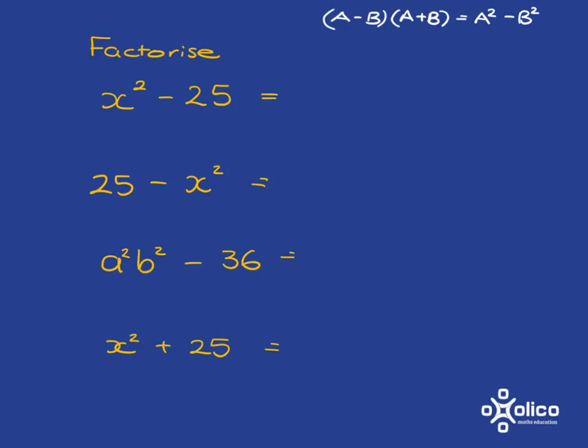So if we're asked to factorise x squared minus 25, what we're being asked is to get the two brackets that multiply together. We know we must have a minus in one and a plus in the other.